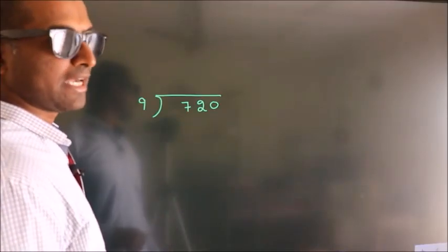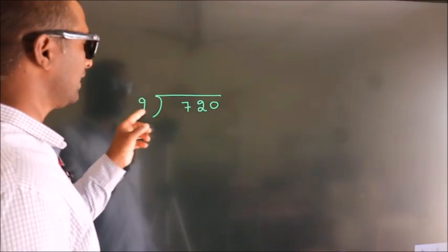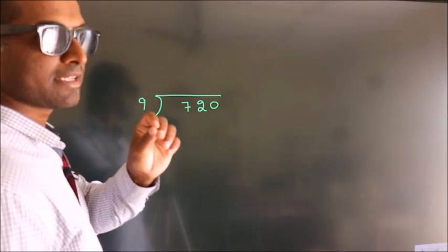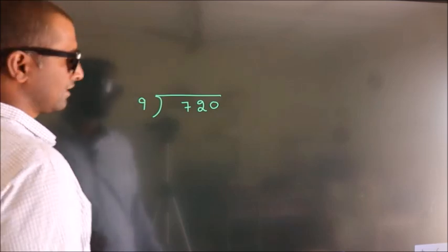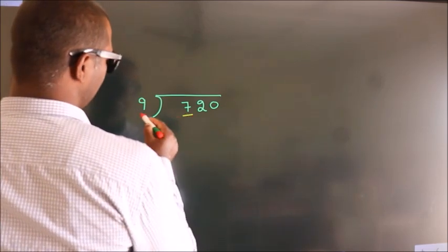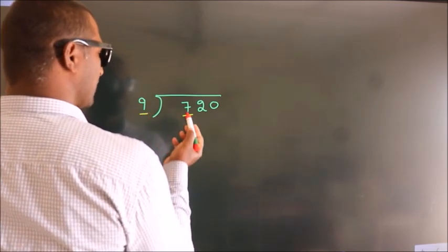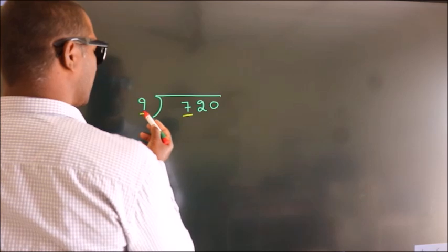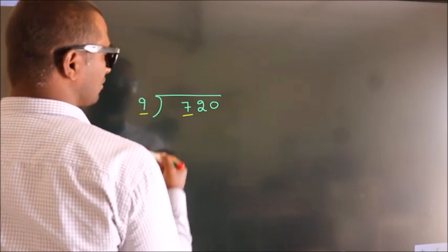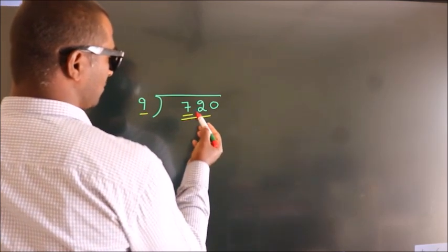How to divide 720 by 9? Here we have 7, here 9. 7 is smaller than 9, so we should take 2 numbers: 72.